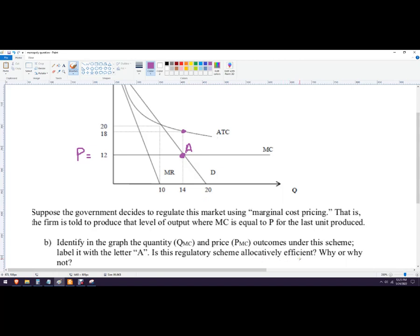Is this scheme allocatively efficient? So allocatively efficient means it's the best for society. And that happens when the marginal costs equals the marginal benefit or the marginal social benefit, which is essentially demand. So the answer is yes.